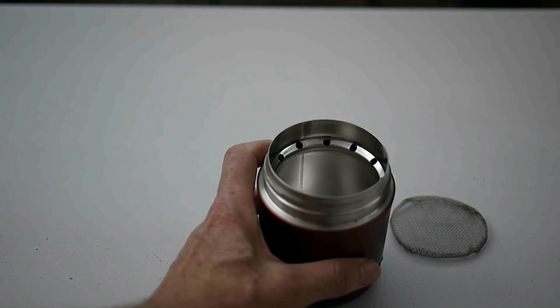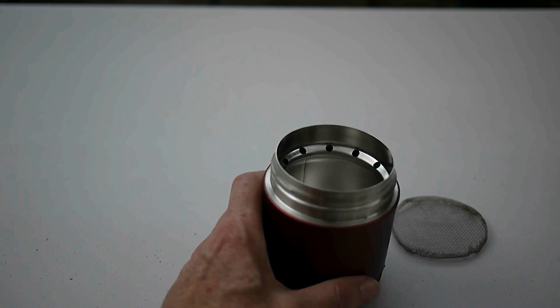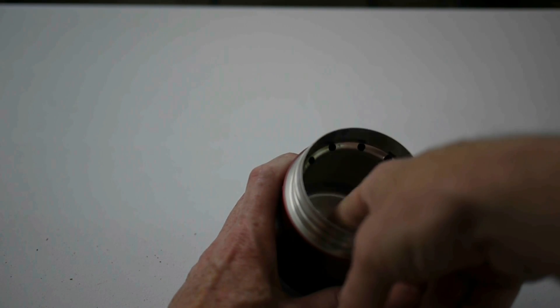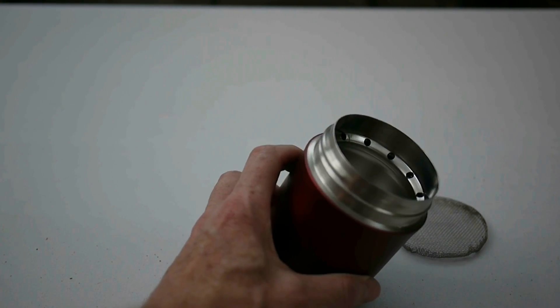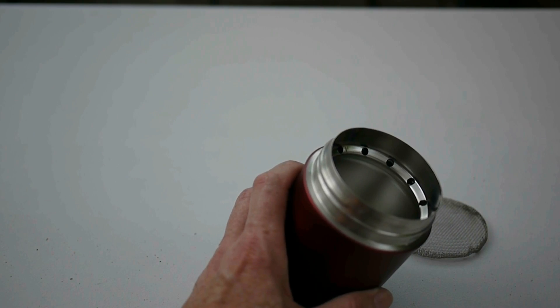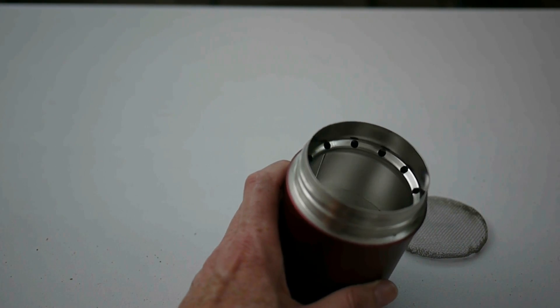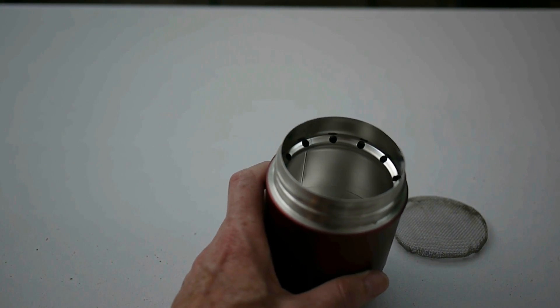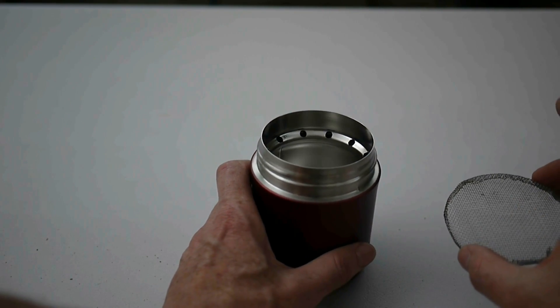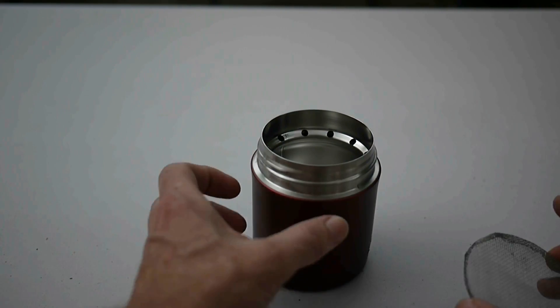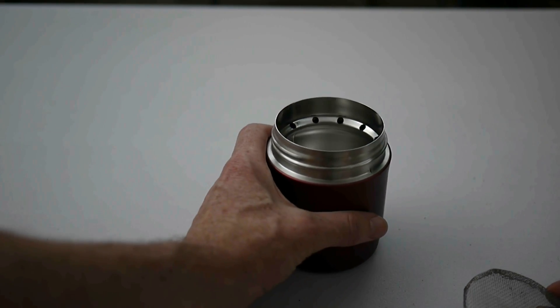So what we end up with is the total area of the holes. The area of the primary holes is about 38 millimeters squared. The total area of the secondary holes is about 236 millimeters squared. So that's a ratio of 6 to 1, which is about right. 5 to 1 is about the normal starting point I go for. But I've copied these holes from another stove that works.